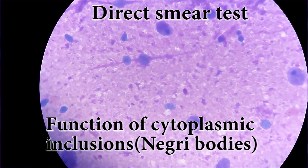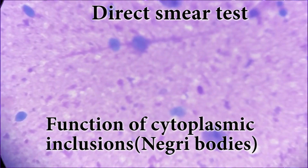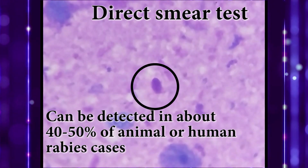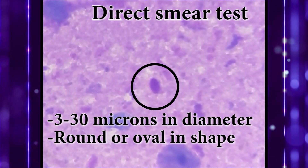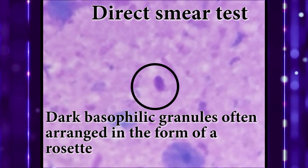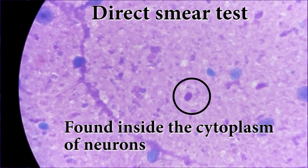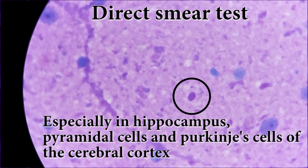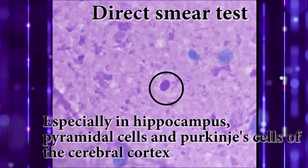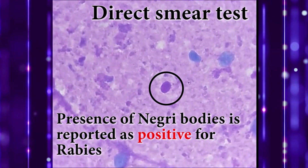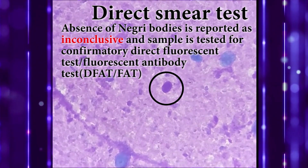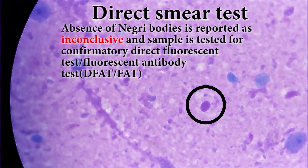When we talk about the direct smear test, formation of cytoplasmic inclusions called Negri bodies can be detected in about 40 to 50% of animal or human rabies cases. They are 3 to 30 microns in diameter, round or oval in shape, with dark basophilic granules often arranged in the form of a process. They are found inside the cytoplasm of neurons, especially in the hippocampus, pyramidal cells, and Purkinje cells of the cerebral cortex. Presence of Negri bodies is reported as positive for rabies. Absence of Negri bodies is reported as inconclusive, and the sample is then tested using the complementary direct fluorescent antibody test.